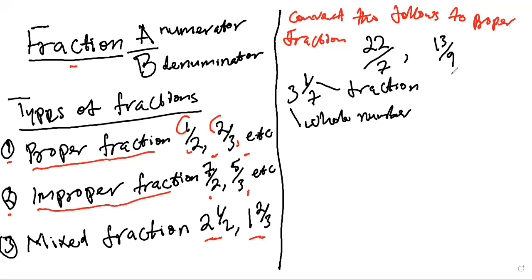And in the other case, we have 13 over nine. How many nines do you have in 13? Just one. So when you take nine out of 13, what you have left is four. Then we have four on top — that's the numerator — and put the nine at the bottom, which is the denominator or the divisor. So we have a whole number and we have a fraction: the one right here is a whole number, and the other part is the fraction part.